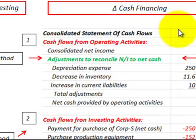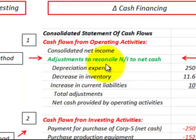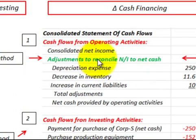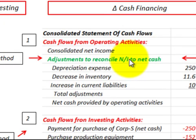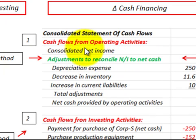We're going to be going over an overview of the consolidated statement of cash flows. We're going to be concentrating on operating activities and the adjustments using the indirect method — the adjustments we'd have to make to reconcile net income from an accrual basis to a cash basis. But before we go into that, let's look at what our consolidated statement of cash flows would include.